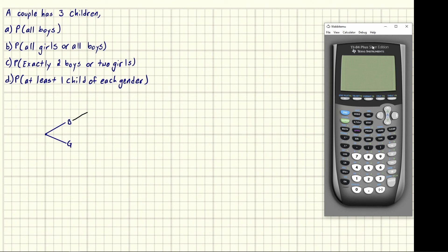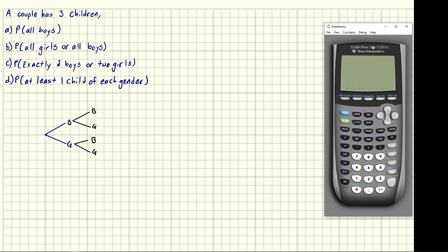After the second kid we split again. Given that the first kid was a boy, the next kid could be a boy or a girl — it's not influenced by the fact that the first child was a boy. Then we do it again after the second kid we have a third kid, so there's a boy or a girl branching at each point. I recommend being consistent with which one you write first because it makes patterns appear.